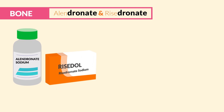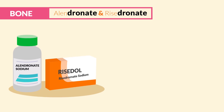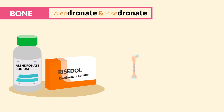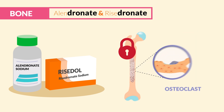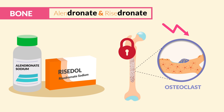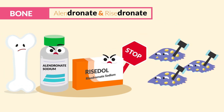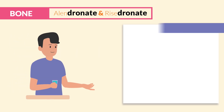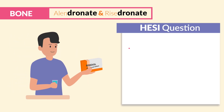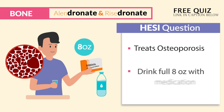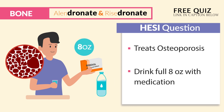Alright guys, let's begin! The bisphosphonates — alendronate and risedronate — are given for osteoporosis. They work by inhibiting bone reabsorption by reducing osteoclast activity in the bone. It basically stops the little guys that break down the bone. The NCLEX question focus is that this drug treats osteoporosis, and we drink a full 8 ounces of water with this medication.